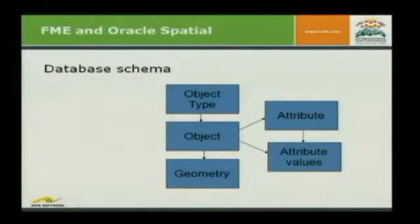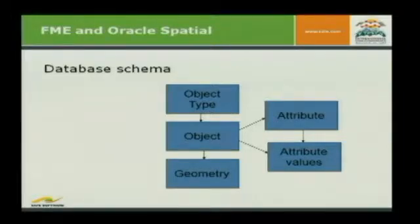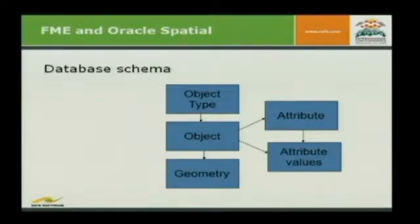I came across this database schema at a customer of ours which is extremely normalized. They had tables called object type, object geometry, attribute, and attribute value. It's very flexible to put your data in there, because if you have a new object type it always fits — every object will fit in this schema — but let me explain that by giving an example.